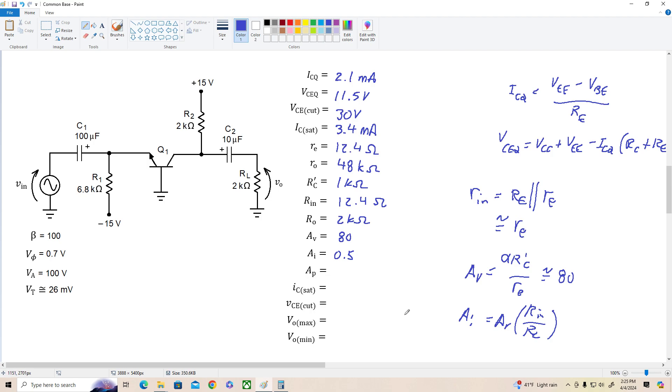And finally, power gain is the product of voltage gain and current gain, right? A sub P equals AV times AI. So that's 80 times 0.5 or 40. So we've got a power gain of 40. Not too bad. Next up is our AC load line parameters. So let me clear off my workspace here and let's take a look at this.